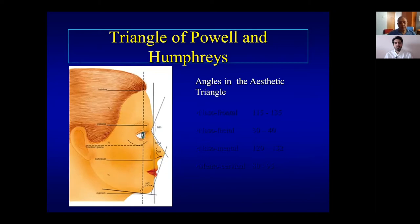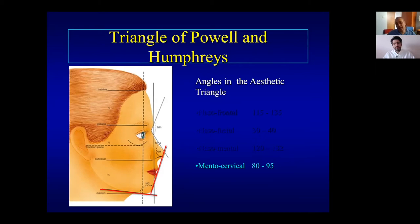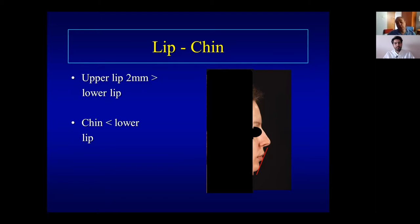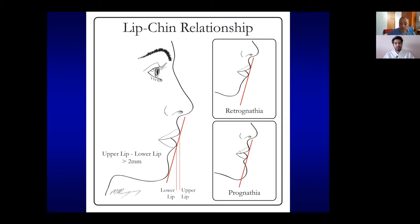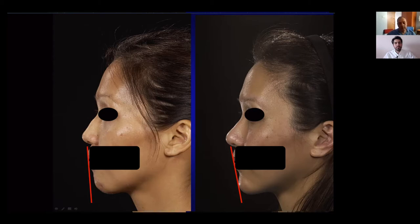There are many angles used in academic research — nasofrontal, nasofacial, naso-mental, mental cervical — but not many people use these in real life. A simple but important assessment is the chin relationship: most people have the upper lip, lower lip (about 2mm behind), and chin in a line. If that line goes inside the chin it's large; if in front, it's small. A small chin creates an illusion of a big nose, so sometimes a chin implant is needed alongside rhinoplasty to achieve a balanced profile.